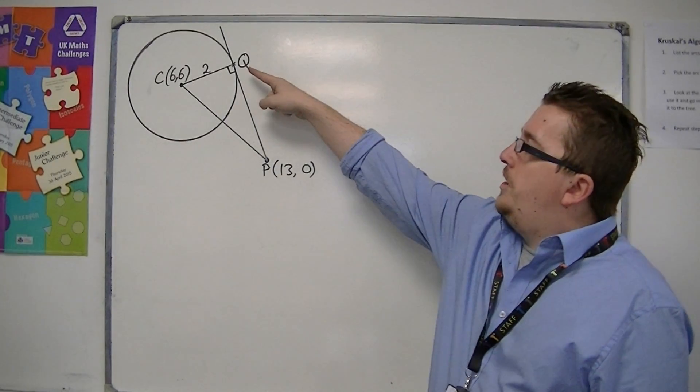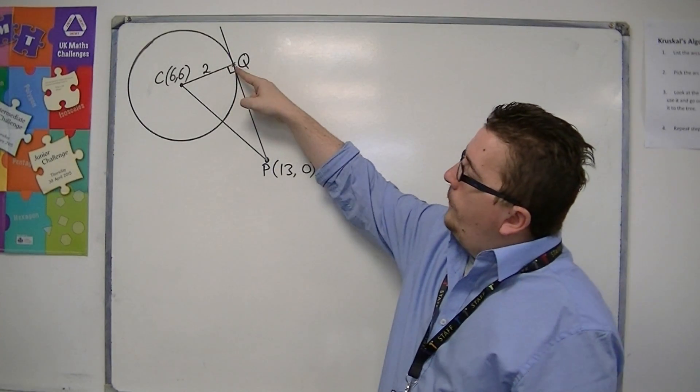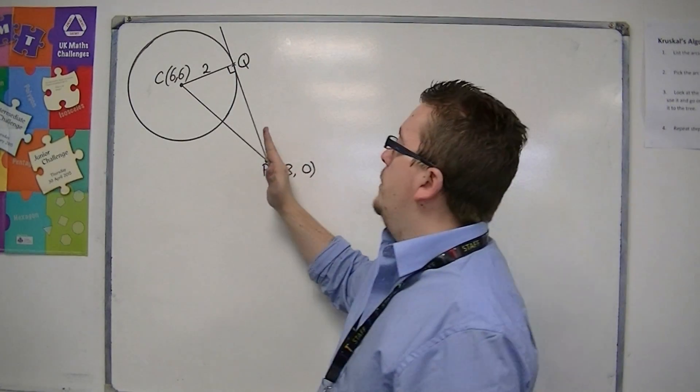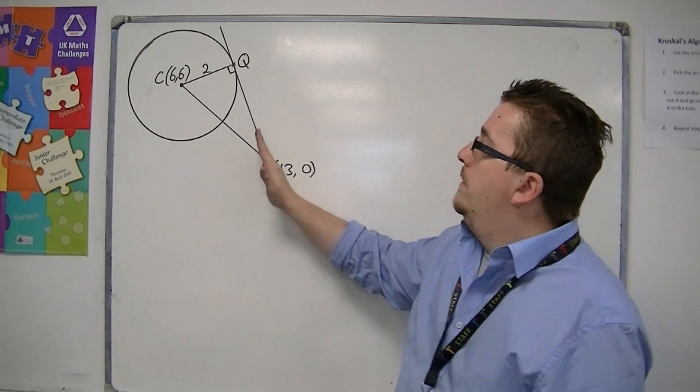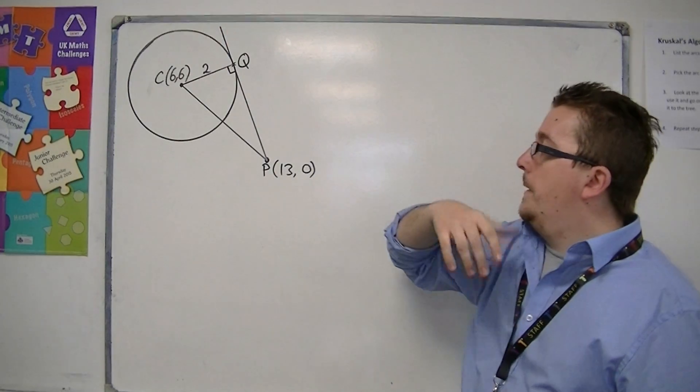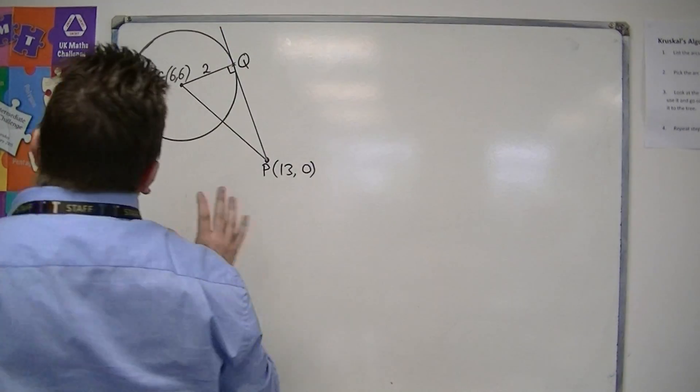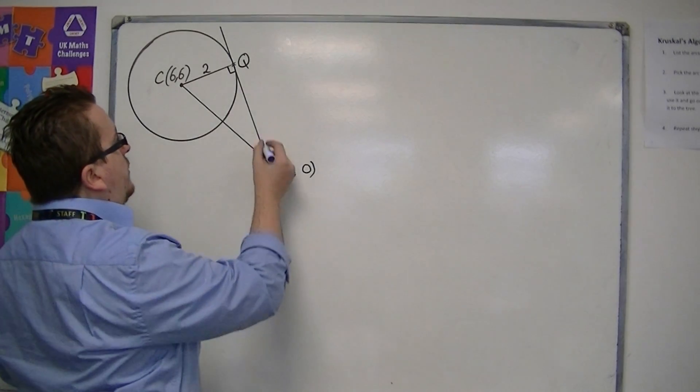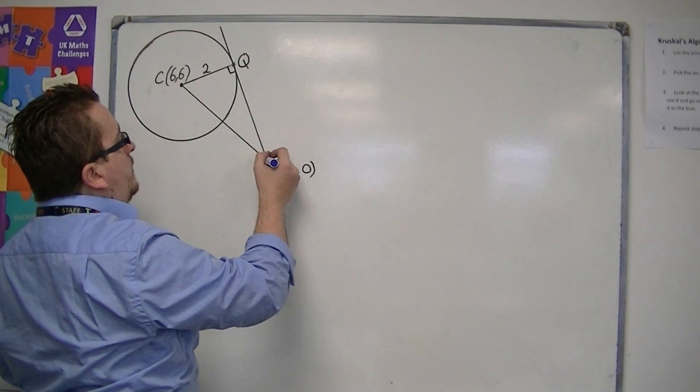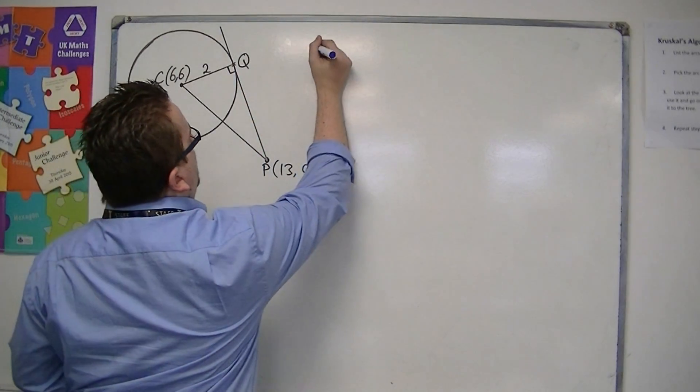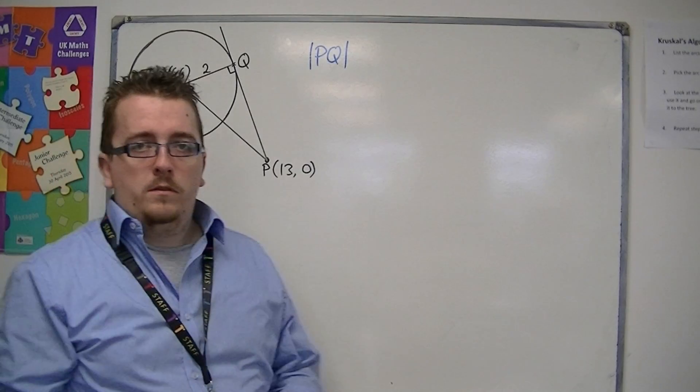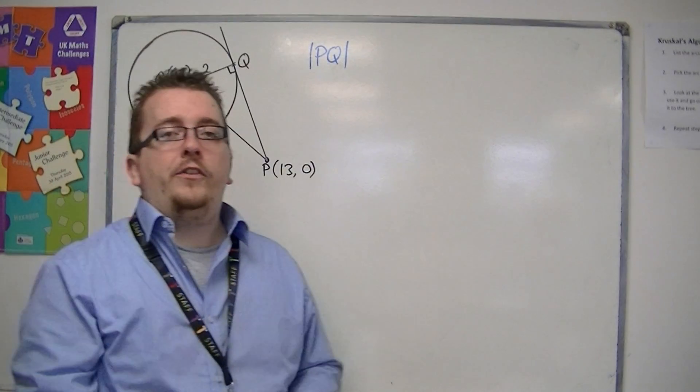The point Q is on the circle and is also on the tangent line from P to the circle. What we want to do is determine the length of this line. So we want the length of PQ, which I'll denote using straight lines on either side to mean the length.